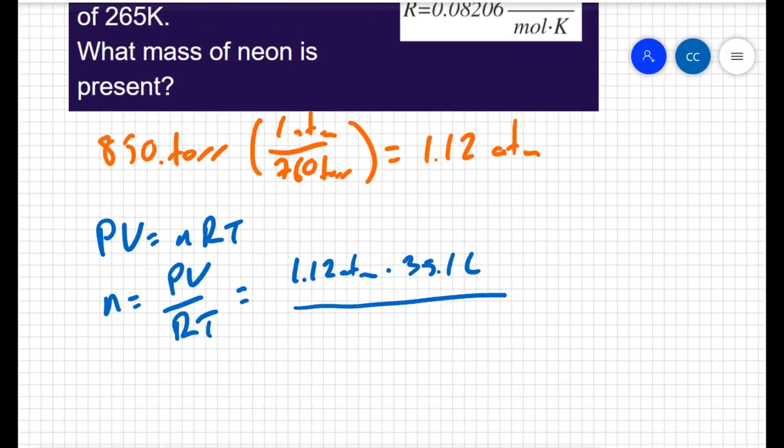The question is asking for the amount of gas in the sample. So PV equals nRT, so the amount is going to be n equals PV over RT.